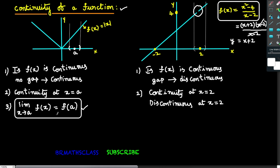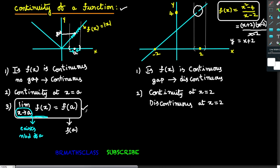Third point — the formal definition: if the limit as x approaches a of f(x) equals f(a), then we say the function is continuous at x = a. The limit as x approaches a gives us information about where f(x) is heading as x approaches from the left and right. If that limit equals the function value f(a), the function is continuous at x = a.